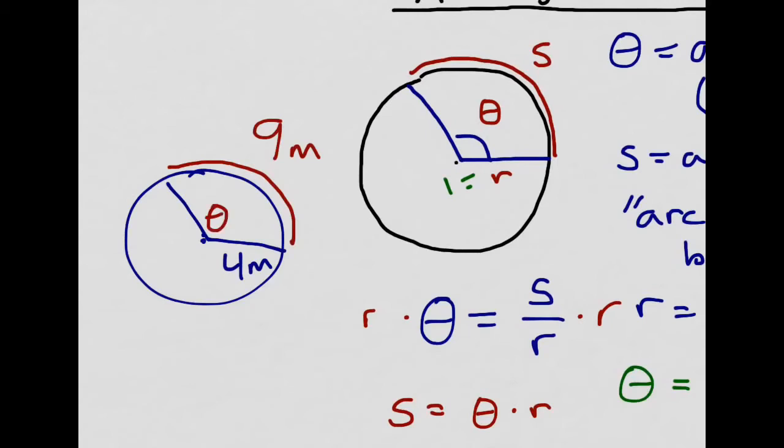The measure of the angle given in radians is going to be 9, the value of the arc length, over 4, the value of the radius.